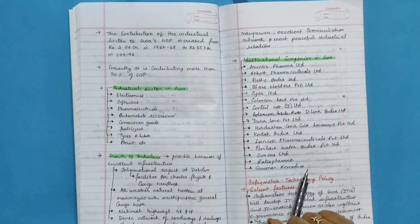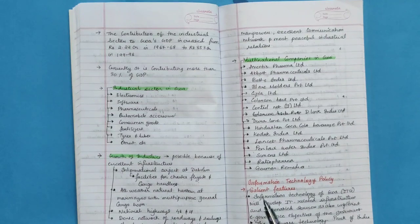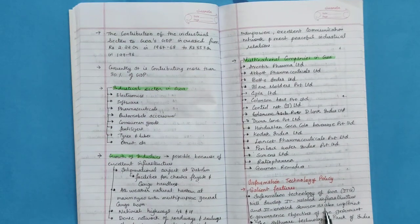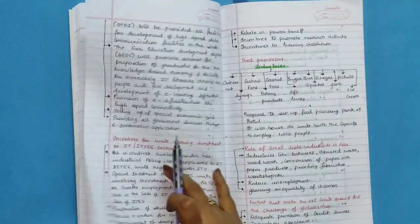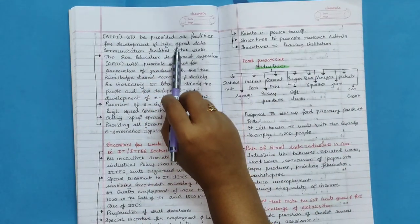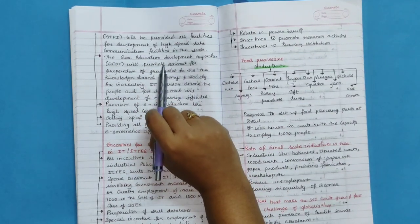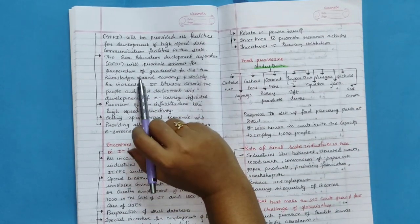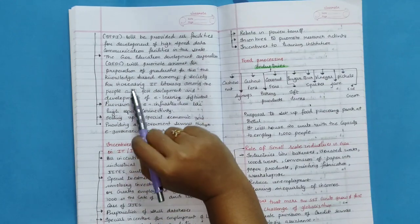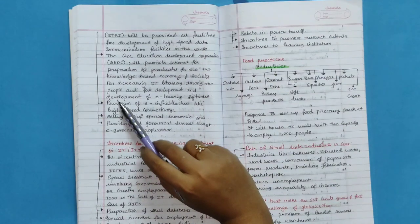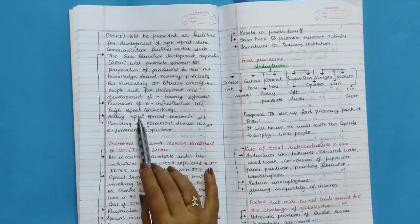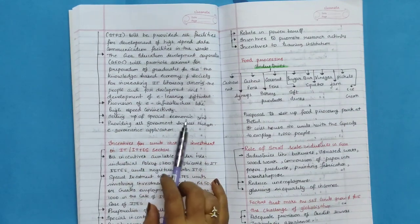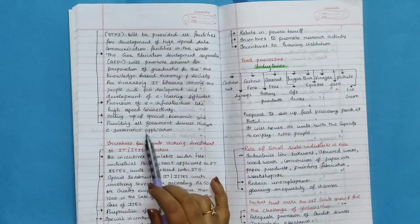Information Technology Policy Salient Features. Information Technology of Goa will develop IT-related infrastructure and it enables services to also implement e-governance objective of the government. The software technology park of India will be provided all facilities for development of high-speed data communication facilities in the state. The Goa Education Development Corporation will promote schemes for preparation of graduates for the knowledge-based economy and society for increasing IT literacy among the people and for development of e-learning software. Provision of infrastructure like high-speed connectivity, setting up of special economic zone, providing all government services through e-governance application.